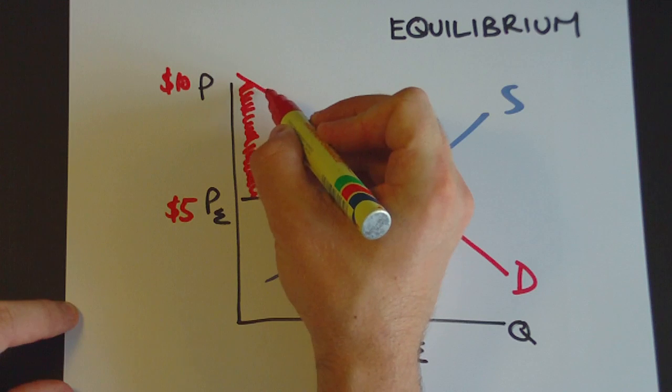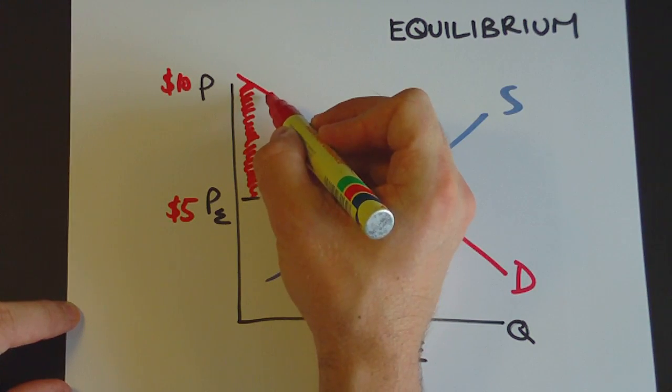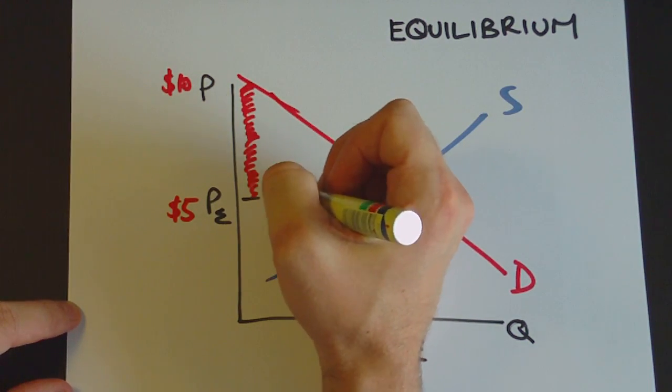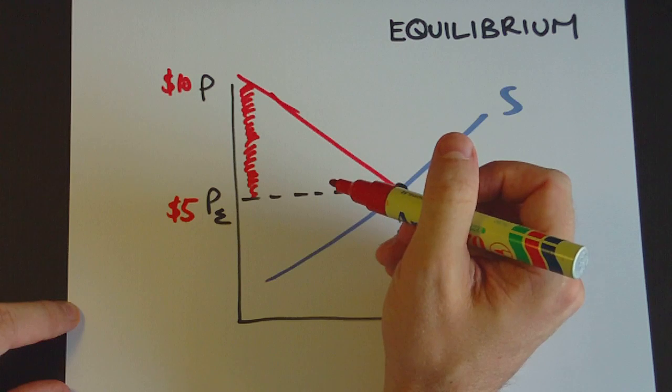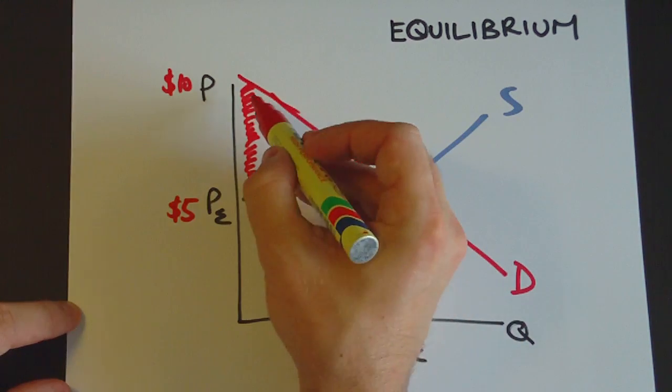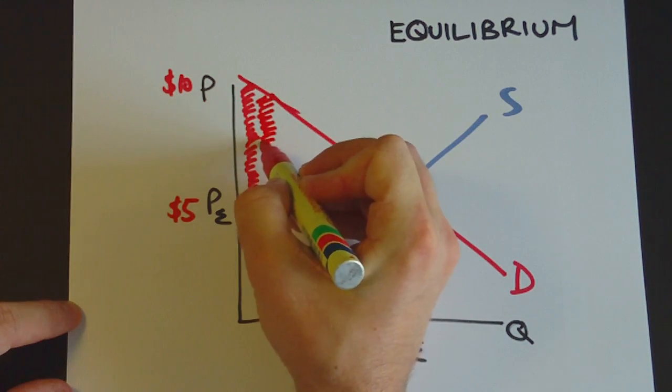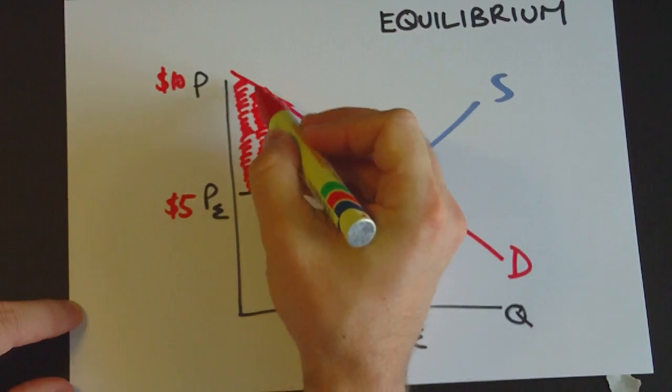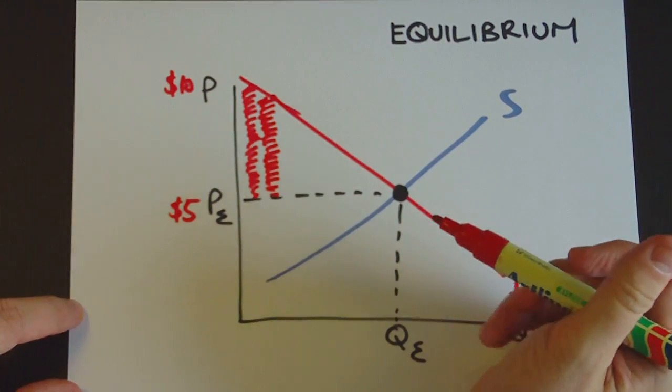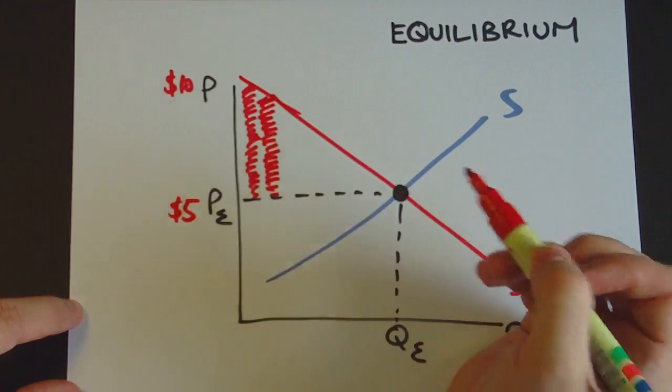There's also a second consumer here who's perhaps willing to pay $9 for the good. But again they find that it's only going to be $5 in the market. And so they have to pay less than they actually value the good for which is fantastic. Willing to pay $9 only have to pay $5.